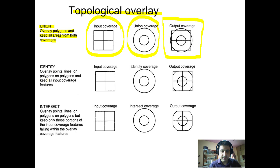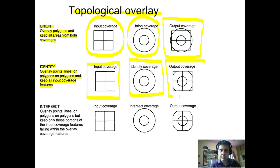Topological overlay using the identity function means overlaying points, lines, or polygons on polygons and keeping all input coverage features. The focus is on the input coverage — we retain all its features. We allow only the portions of the identity coverage which fall within the frame of the input coverage. The output reflects this selection.